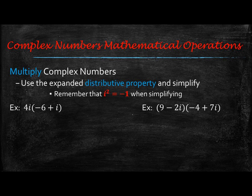Now, multiplying complex numbers. You're going to use the distributive property, or the expanded distributive property, and then simplify. You also want to remember that i squared is equal to negative 1 when you're simplifying — if you have an i squared in your answer, you're not completely simplified.